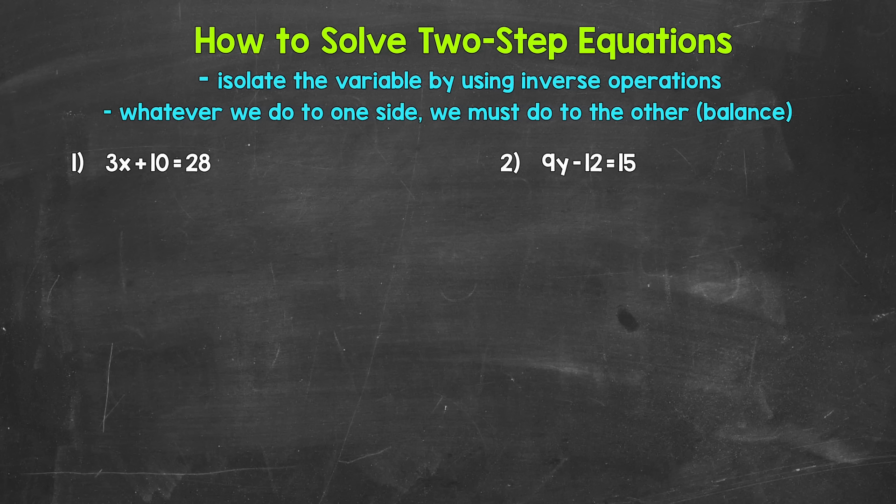Let's isolate that variable x. We need to undo the operations on the side of the equation with that variable x, and we're going to go in the reverse order of operations in order to do that. We have multiplication and addition, so in reverse order of operations, we need to undo the addition first.